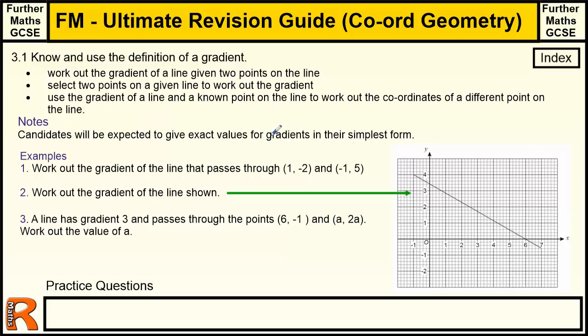The note here is exact values for gradients in the simplest form. I would strongly suggest that you get used to leaving gradients in fractions, in top-heavy fractions in the simplest form. So for example, if you had the gradient 7 over 2, although that's equal to 3.5, you don't write 3.5. This is a much more useful number when dealing with calculations. If you get used to this now, it's going to save you a lot of hassle in the long term.